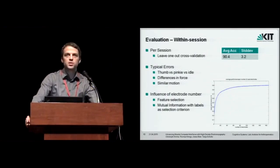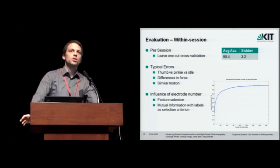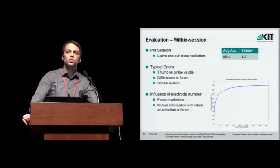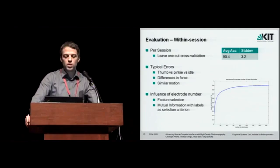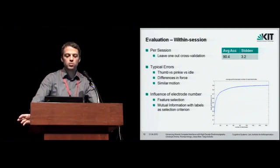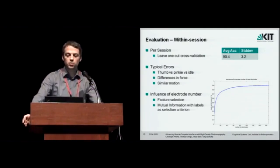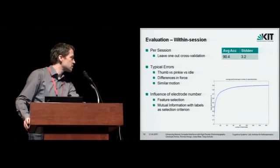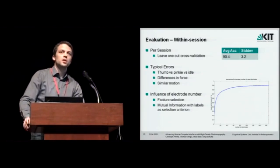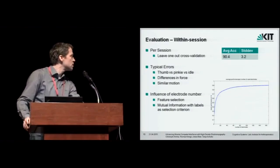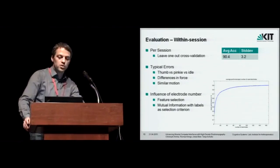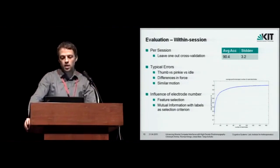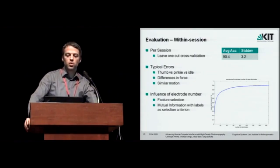And also the movements that only differ in force and of course some similar motion movements are sometimes confused. We also looked at the influence of the number of electrodes in order to get an idea if we really get benefits from that high number of electrodes. So what we did is a feature selection based on mutual information with the labels selection criterion.